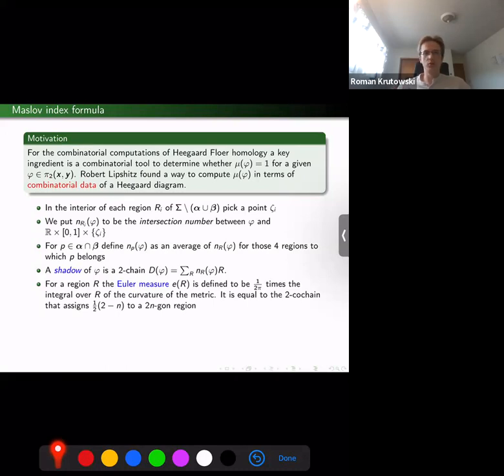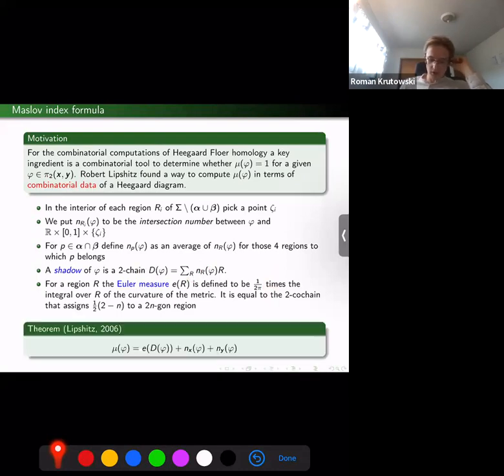Then a shadow of a domain φ is a 2-chain associated with it, where one just takes these regions R in sigma with the corresponding coefficients. One more thing that we need to know is how to compute the Euler measure of a shadow of a domain. We first define an Euler measure for each region by computing an integral over R of the curvature of the metric that we've chosen times the area, times 1/(2π), and then extended by linearity for all such 2-chains.